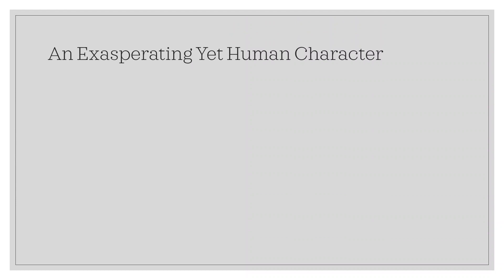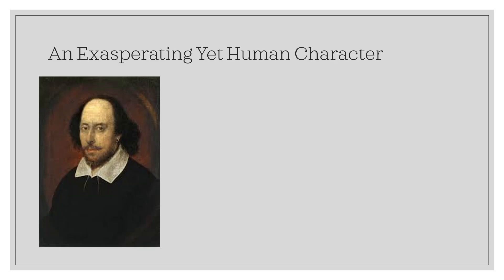Written between 1599 and 1601, William Shakespeare's Hamlet tells the story of a young prince named Hamlet, who returns home to Denmark after leaving school in England. He learns that his father died, that his uncle Claudius took the throne, and married his grieving mother. Hamlet's grief turns to rage when he is visited by his father's ghost, who tells Hamlet that his uncle Claudius murdered him.